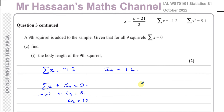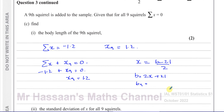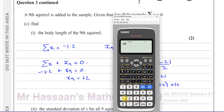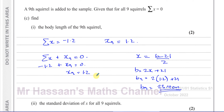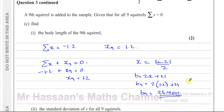The ninth coded value x₉ is 1.2. Using the coding x equals b minus 21 over 2, we rearrange to get b equals 2x plus 21. So the ninth body length b₉ equals 2 times 1.2 plus 21, which gives 23.4 centimetres. That's the actual body length of the ninth squirrel after decoding.